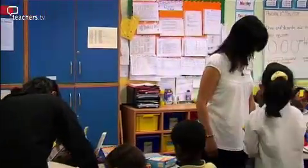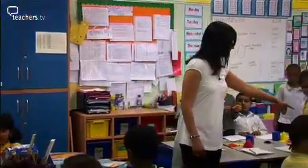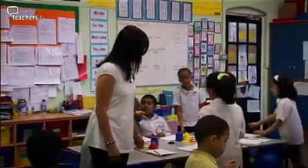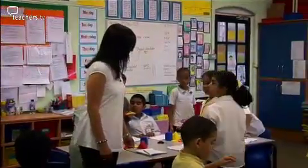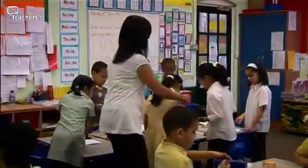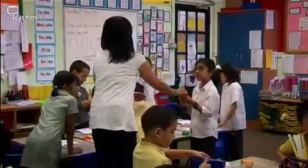A child asks about right angles. Instead of answering directly, the teacher says: 'Ask people over here — Saba, what do you think about that? Is that a right angle?' The trainer comments: 'She's sent her to the other right-angle group to look and ask them. Clever teaching — it's really encouraging their independence from her and some peer collaboration.'